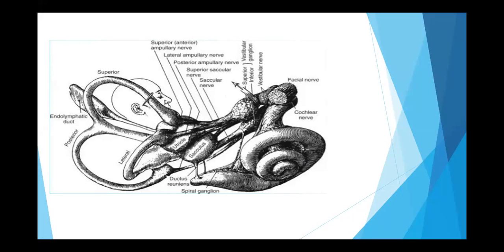You can see the utricle, you are seeing the saccule, and you are looking at the nerves very closely. You see that each semicircular canal and the otolith organs are sending separate inputs to the vestibular nerve, and you can also appreciate the cochlear nerve and the facial nerve. All these three things are together leaving through the internal auditory meatus.